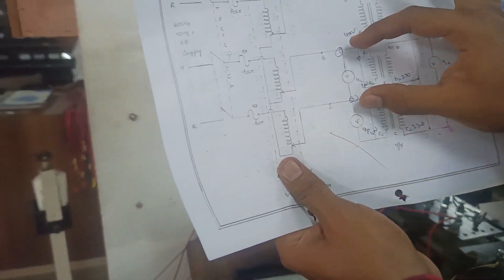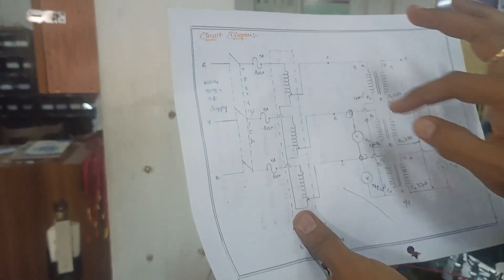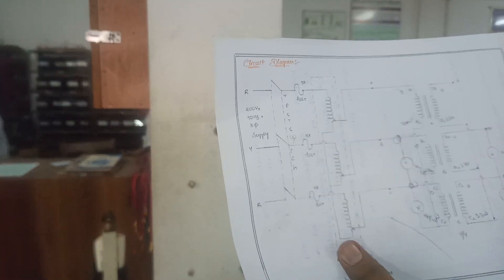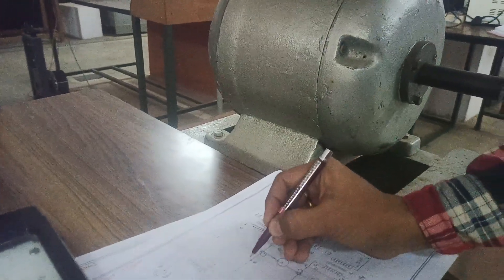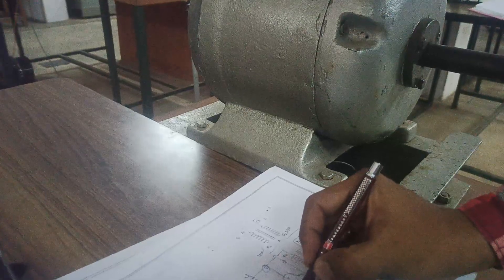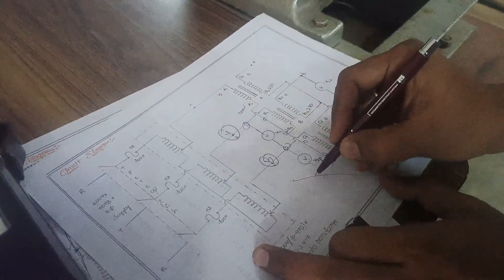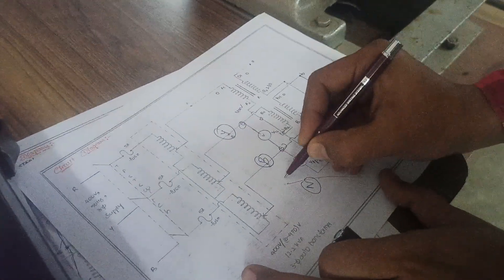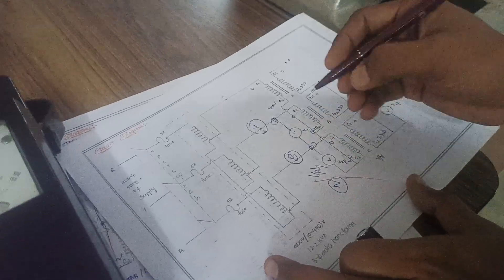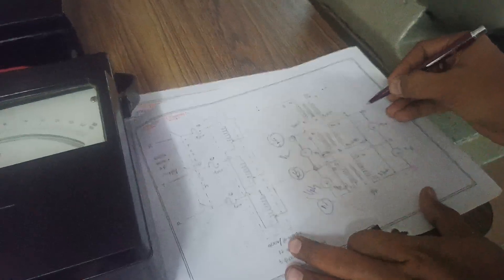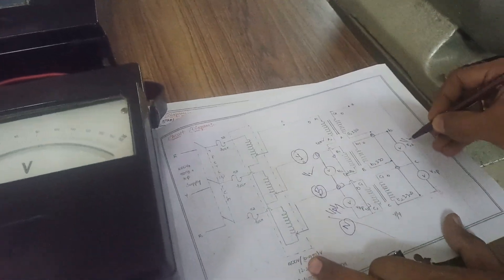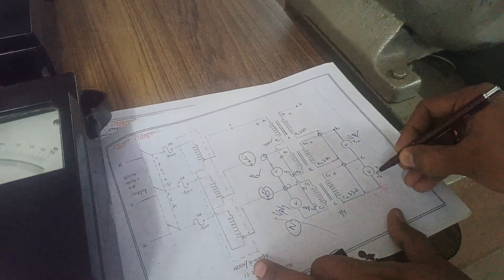Let us give the same circuit diagram. Between R and Y I connected one voltmeter. When you connect it you are going to have three phases. This voltmeter is connected between Y and B, and this voltmeter is connected between B and neutral — therefore this voltmeter acts as a measurement of phase voltage. This voltmeter acts as a measurement of line voltage, and this voltage also acts as a measurement of line voltage. This voltmeter is at the secondary side; this is the primary side.